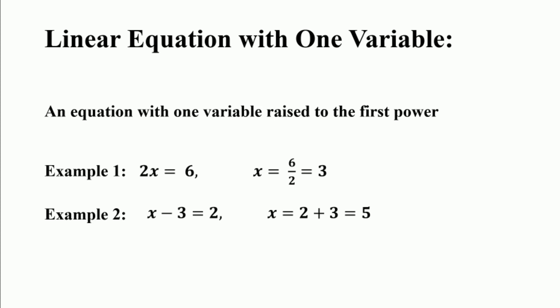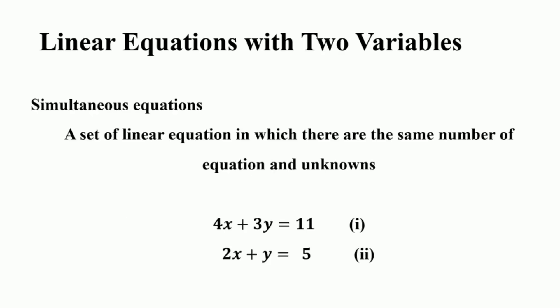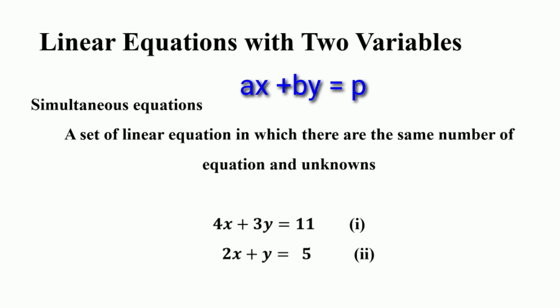A linear equation with two variables shows a relationship between two unknown values. A set of values for two unknown variables satisfies an equality statement. For example, ax plus by is equal to p, where x and y are the two variables, a and b are non-zero coefficients, and p is the constant. If we have two linear equations with the same variables, they are called a system of equations, and the equations in the system are called simultaneous equations.